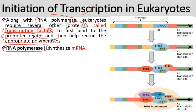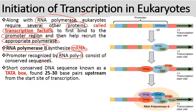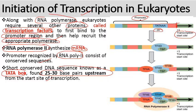RNA polymerase 2 is mainly involved in the synthesis of mRNA. The promoter recognized by RNA polymerase 2 consists of conserved sequences. RNA polymerase recognizes this promoter region because of special conserved sequences present within it. Short conserved DNA sequences known as the TATA box are found 25 to 30 base pairs upstream from the transcription start site. These are adenine- and thymine-rich sequences.